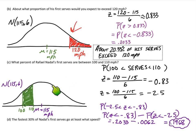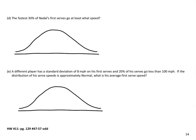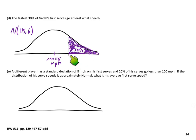That's another reason why it's so valuable to sketch and shade these well. If your answer said something like 65%, you'd know right away that doesn't match the graph. So in context, about 19.68% of Nadal's serves are between 100 and 110 miles per hour. Part D says: the fastest 30% of Nadal's serves go at least what speed? I'll mark the mean, and estimate where a boundary goes such that the area above it is 30% — but how fast would that serve actually be?